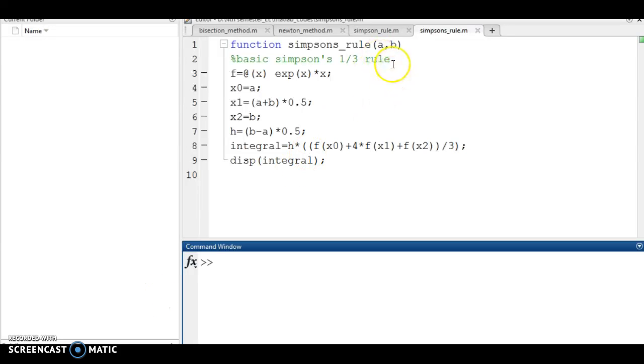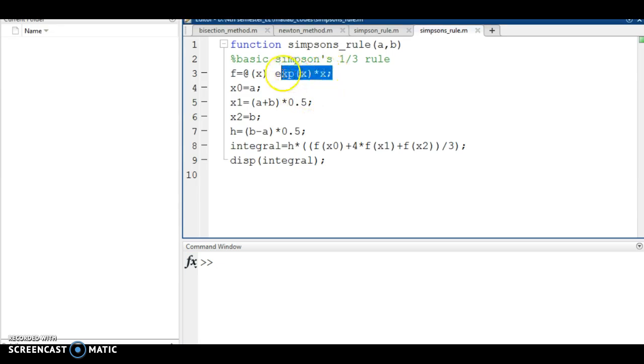Here we implement Simpson's 1/3 rule in MATLAB for the function exponential of x times x. As done before, we take the initial and final point and pass it through the function.